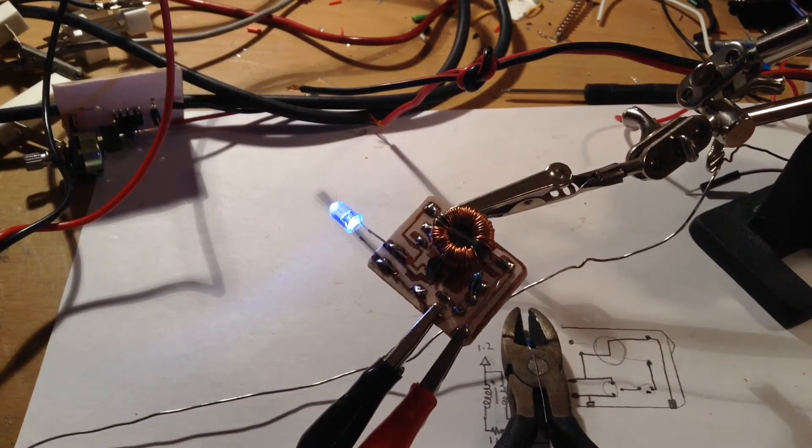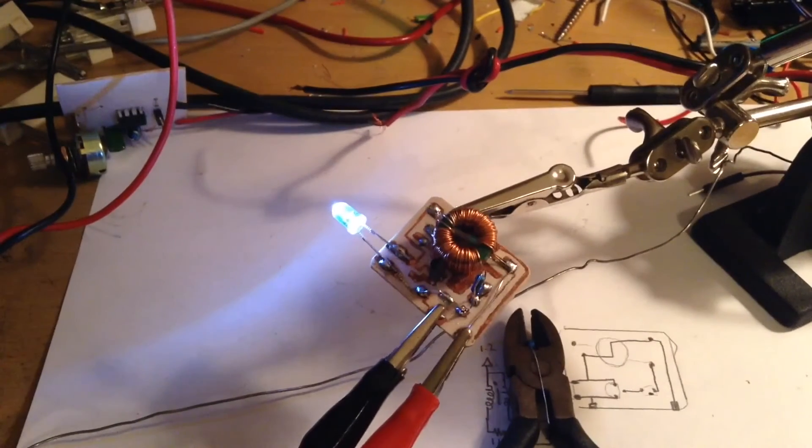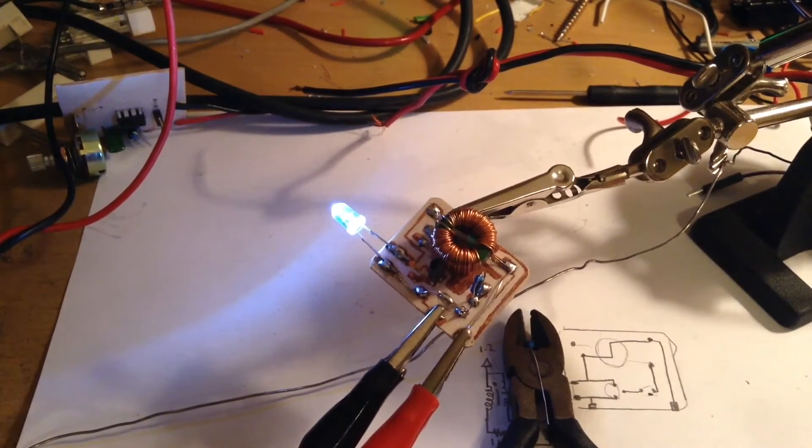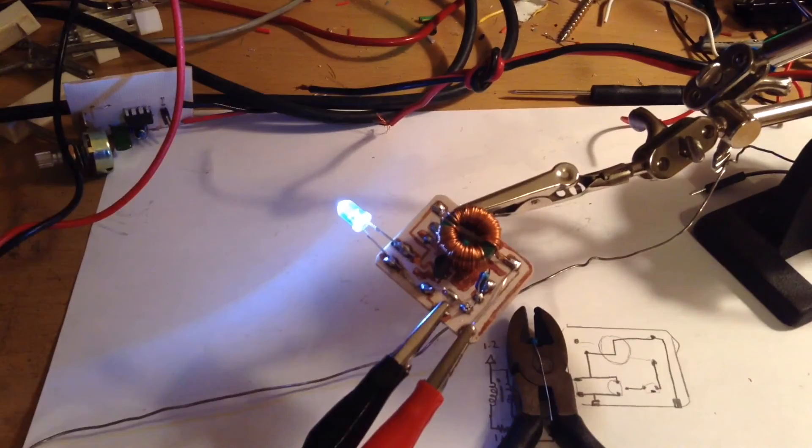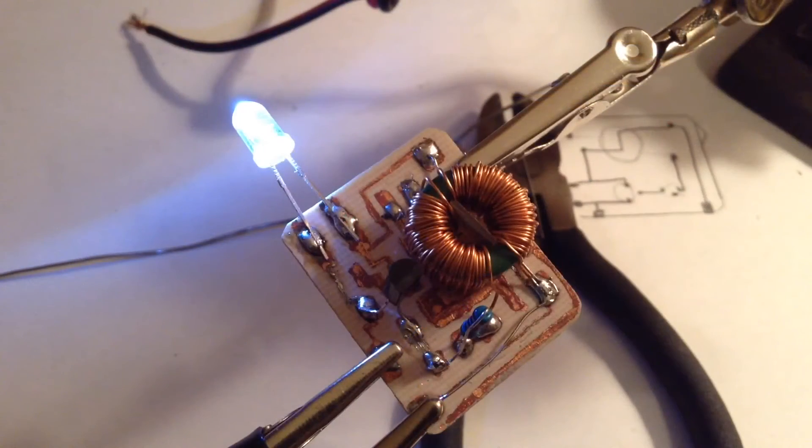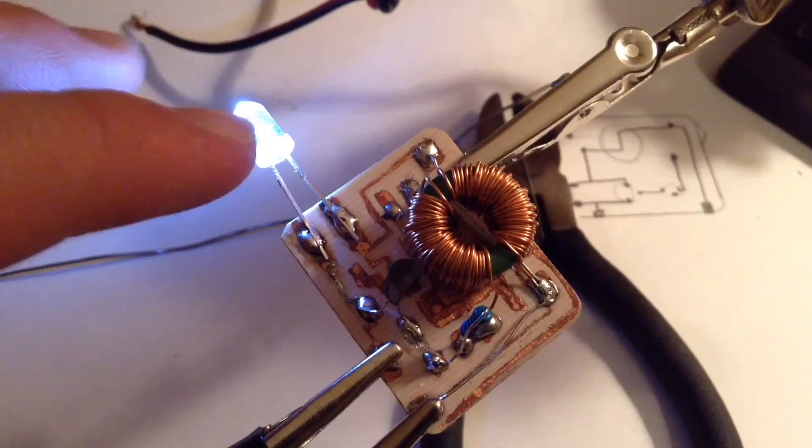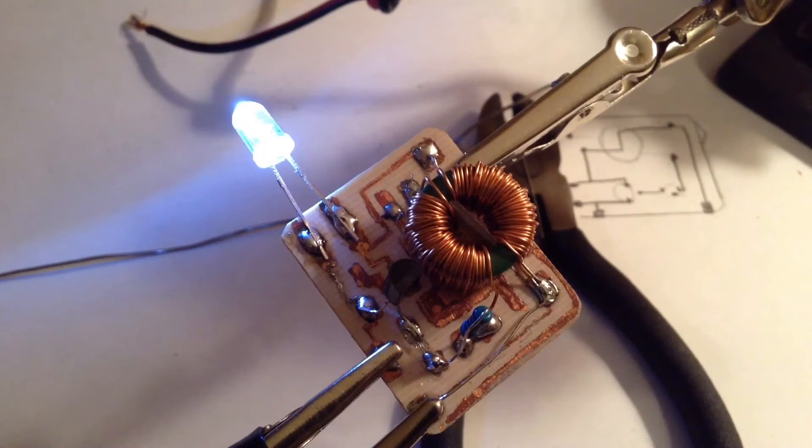And it lights up. You can see if I turn off the light, it's extremely bright, especially for 1.2 volts. This joule thief circuit is working very well. This is the completed joule thief setup made on this manufactured board. It runs off 1.2 volts and it lights up this LED super bright. This board looks very professional.